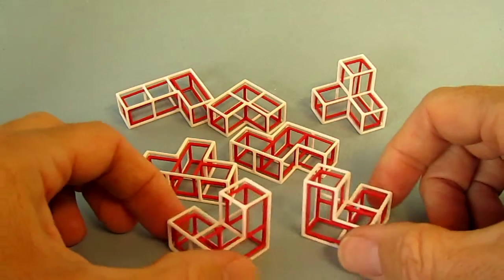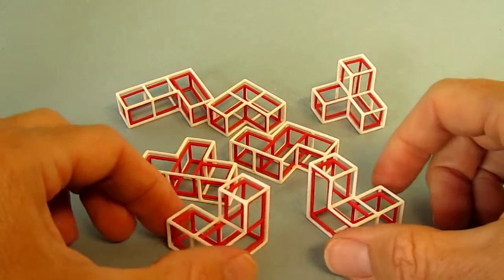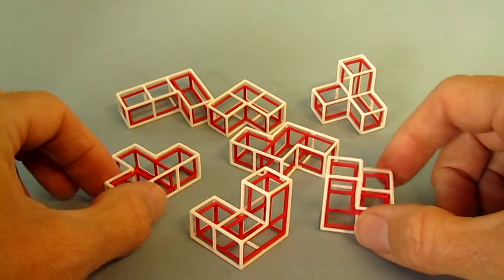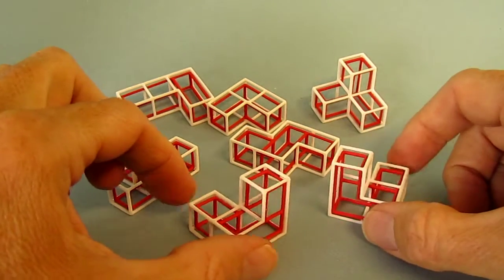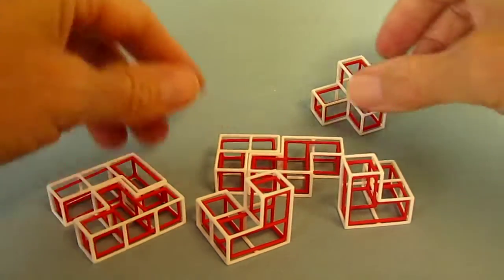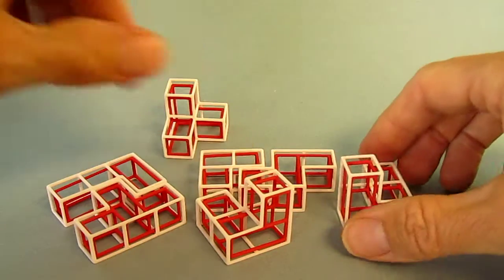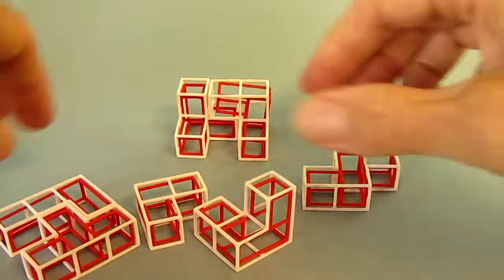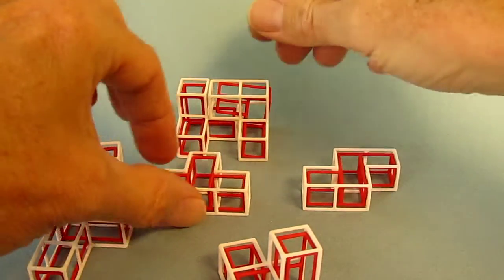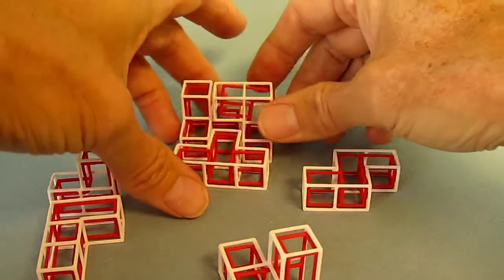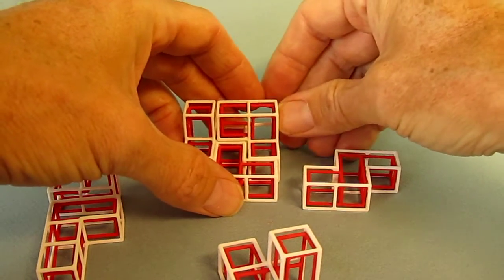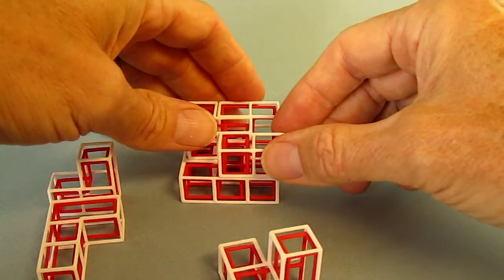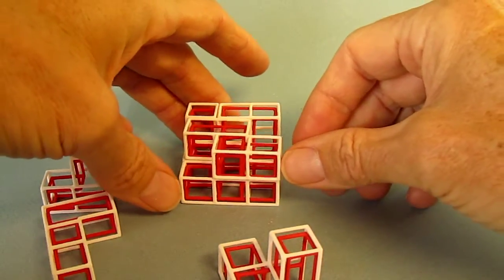Now we have seven parts that look like the classic SOMA cube parts. We can pretty quickly assemble these into one of the cube solutions. There are 240 different ways you can assemble these into a cube, and those are some of the challenges you can do with SOMA's Revenge.